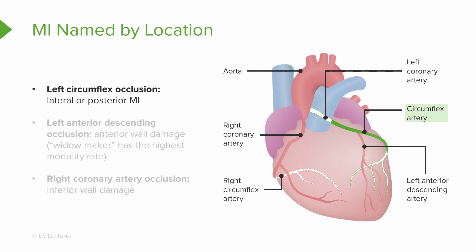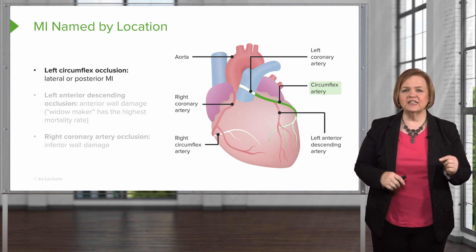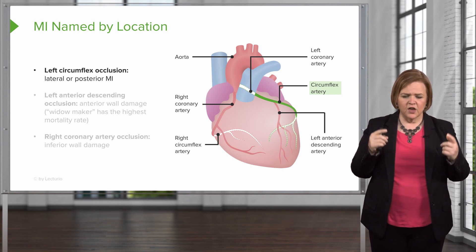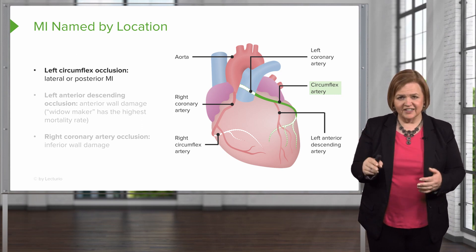If we have a blockage in the left circumflex artery, it's going to be a lateral or a posterior MI. In the drawing, we've tried to show you how it wraps around — as the vessel comes around the backside of the heart, it's shown with a dotted line. The artist did that so you have a 3D picture in your mind of how these vessels wrap around the cardiac muscle. Make sure you can name these vessels from memory without looking at notes.